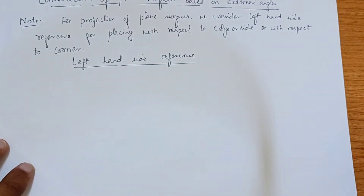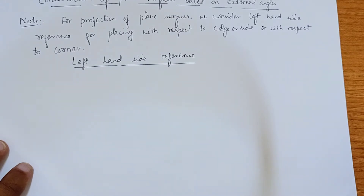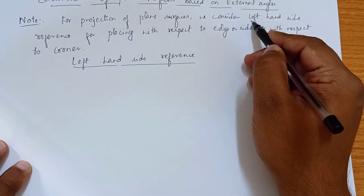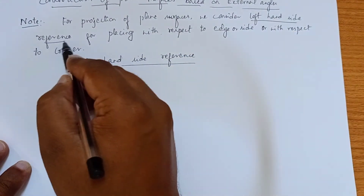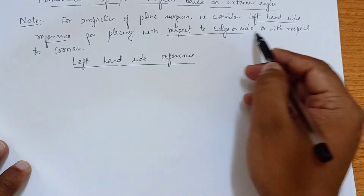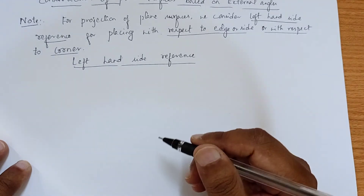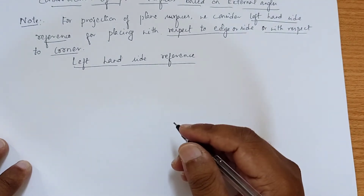Construction of plane surfaces based on external angles. We have one concept here — the construction of the plane surface with respect to the left-hand side reference. In order to construct any plane surface, we consider the left-hand side reference for placing with respect to an edge, side, or corner. The left-hand side is the reference for constructing any plane surface.